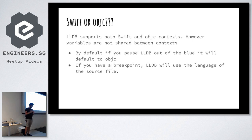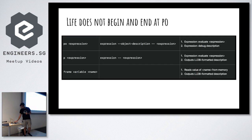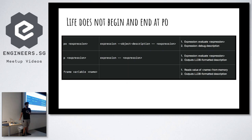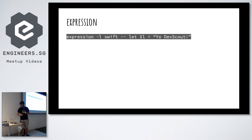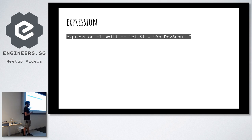Under the hood, `po` and `p` are just aliases for `expression`. So `expression` is the unifying command in LLDB that evaluates any expression, and you can pass it a lot more flags. For example, you can specify the language with `-l swift`. This means you can evaluate any Swift expression. You can even declare new variables — you just need to prepend them with `$`.